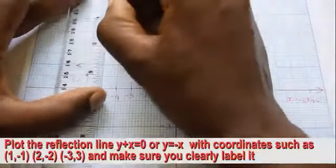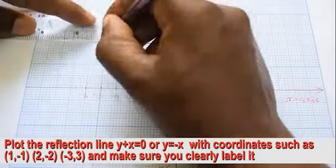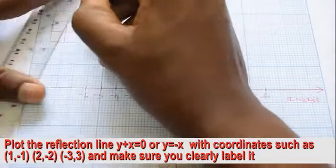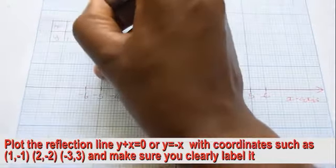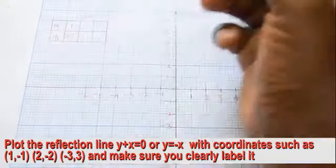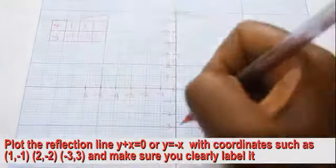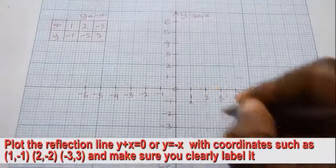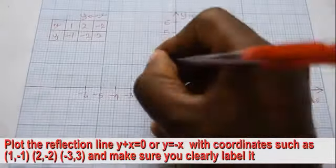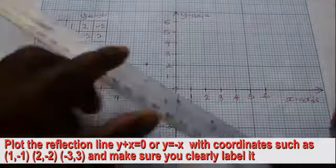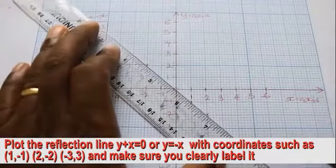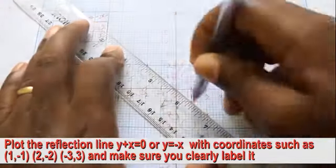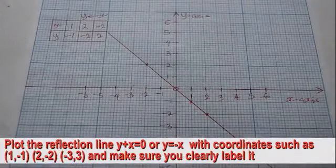Write the reflection line. To get the required line, the coordinate of x plus the coordinate of y must equal zero. For example: (1,-1), (2,-2), (-3,3).